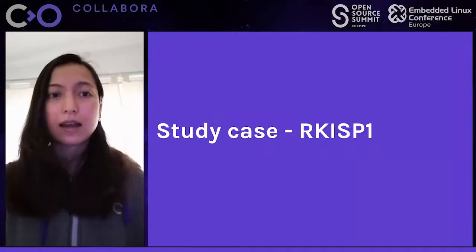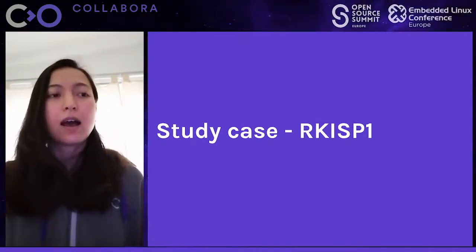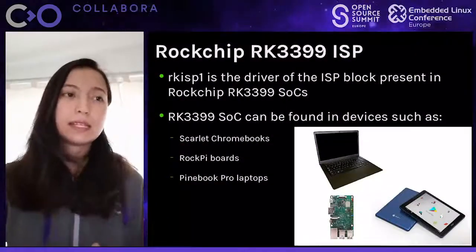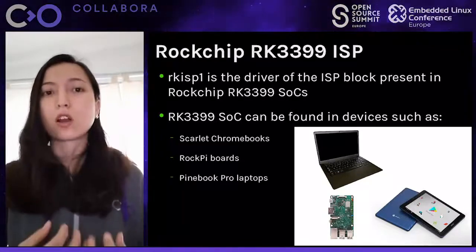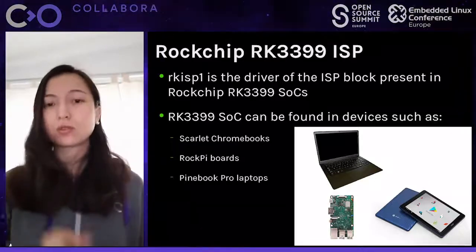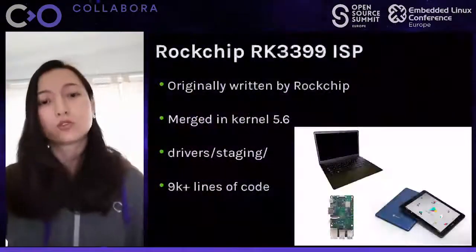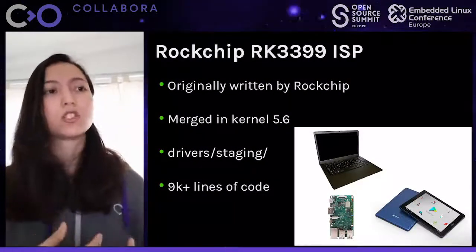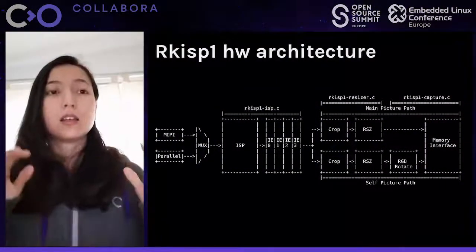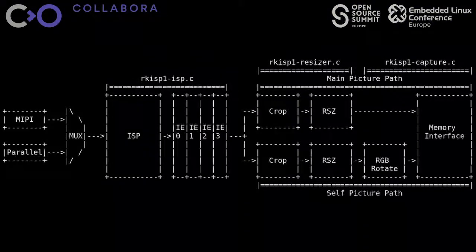Now I'd like to talk about the RK ISP1 driver specifically, as I have the most experience with it and will use it as an example throughout this presentation. The RK ISP1 is the driver for the ISP block present in the Rockchip RK3399 SoCs. These SoCs can be found in devices such as the Scarlett Chromebooks, RockPi boards, or Pinebook Pro laptops. The driver was originally written by Rockchip and was merged in kernel 5.6 under drivers/staging with more than 9,000 lines of code.